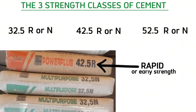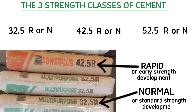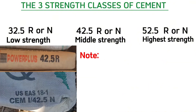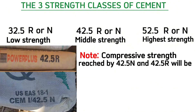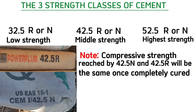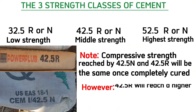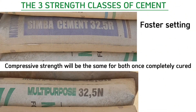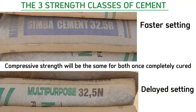R refers to rapid or early strength development, and N refers to normal or standard strength development. While 32.5 is of low strength, 42.5 of mid-range strength, and 52.5 of the highest strength. When choosing the right cement, keep in mind that the compressive strength reached by 42.5 N and 42.5 R will be the same once completely cured. However, 42.5 R will reach a higher initial compressive strength — that is, set faster — than 42.5 N.